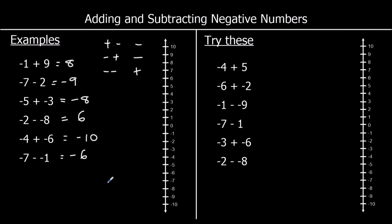Six for you to try. Pause the video and have a go at these. The first one is negative 4 plus 5. Negative 4 is our starting point, we're going up 5, and that is 1.